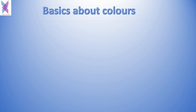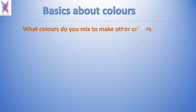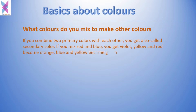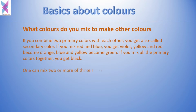So we just saw that there are only a few colors — so how do we make other colors? If you combine two primary colors with each other, you get a secondary color. If you mix red and blue you get violet, yellow and red becomes orange, blue and yellow become green. If you mix all the primary colors together you get black. One can also mix two or more of these colors to create another color.